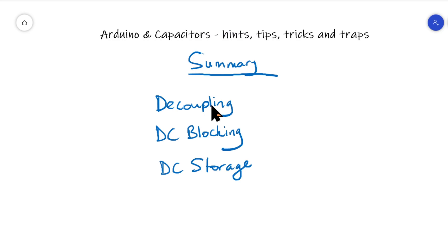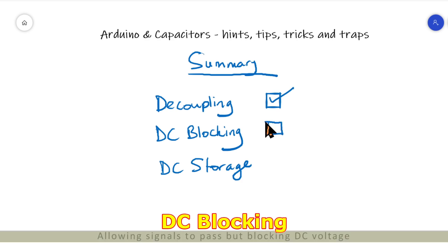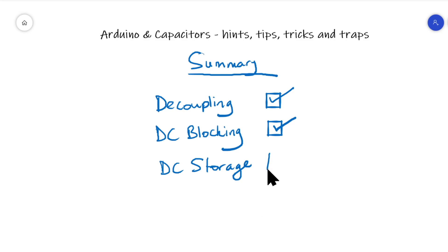So in summary, we've seen that capacitors can be used for decoupling across the VCC and ground of any chip, not just the Arduino, anything that might be used. We've seen that it can be used for DC blocking when you're connecting one unit to another and stops the DC element of the signal being passed across.